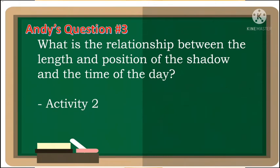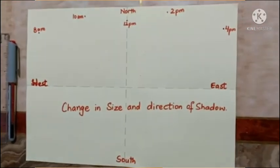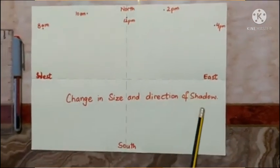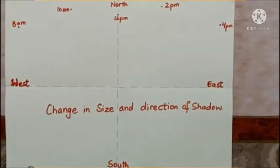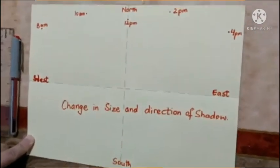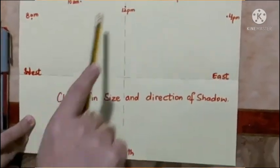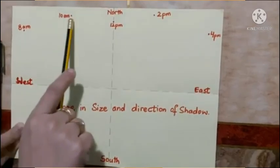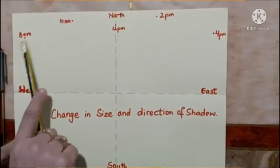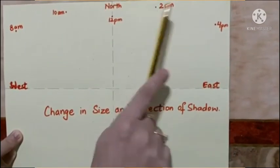For Andy's question number 3 — what is the relationship between the length and position of the shadow and the time of the day — let's do Activity 2. In this activity, we are going to see the change in size and direction of shadow. For this, we need a plain paper. Draw 4 lines showing the direction east, west, north, and south. Mark these points with equal distance into the center point: 8am, 10am, 12pm, 2pm, 4pm.